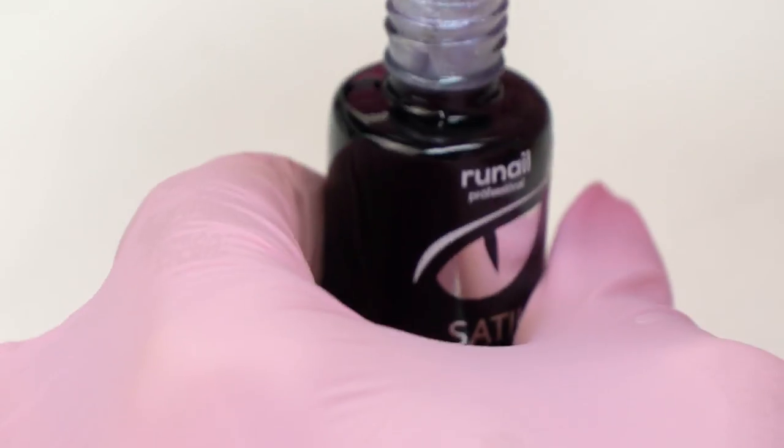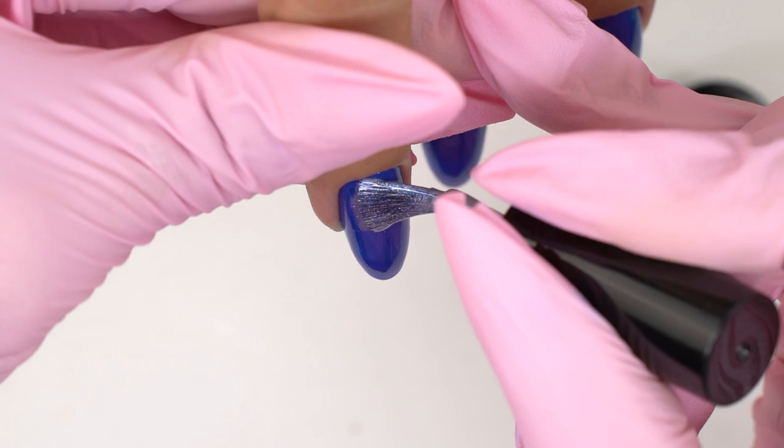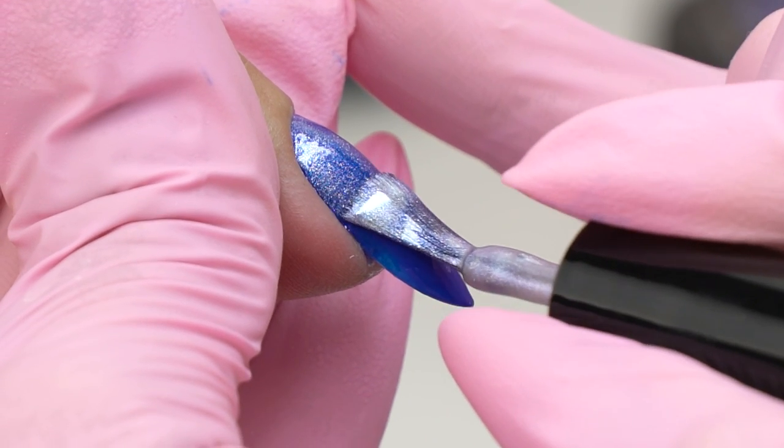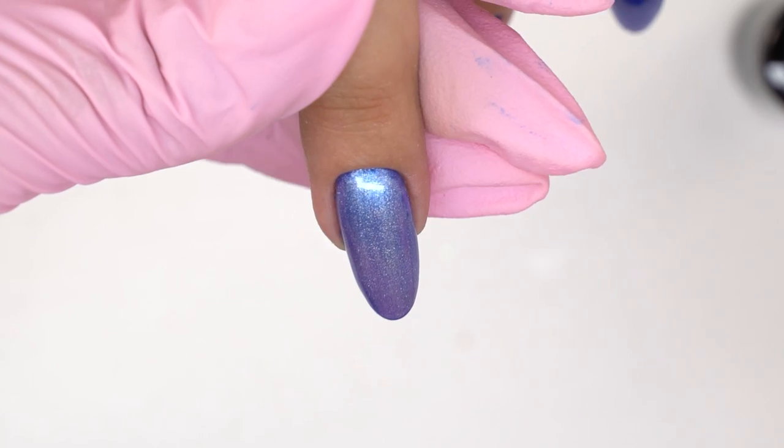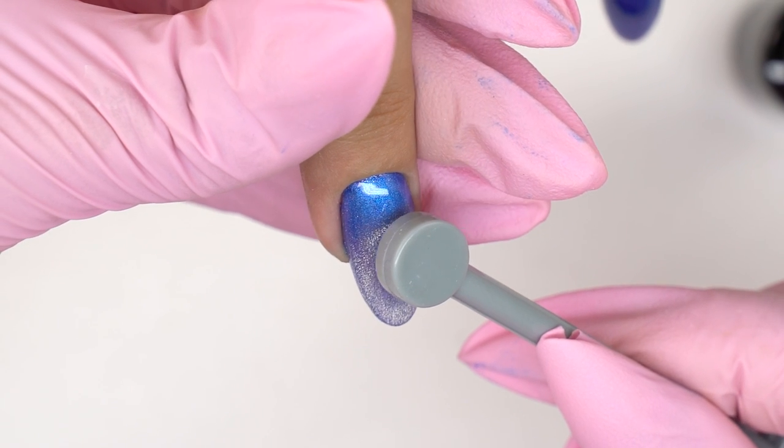To spice it up, we decided to add this cat eye gel polish. This one is with blue and silver shimmer. I do one layer and use a round magnet over it. Let's do a moon-shaped highlight on both nails.